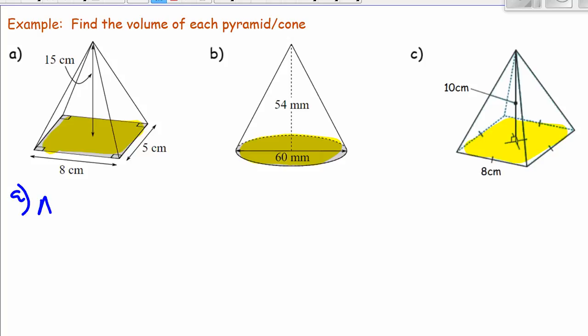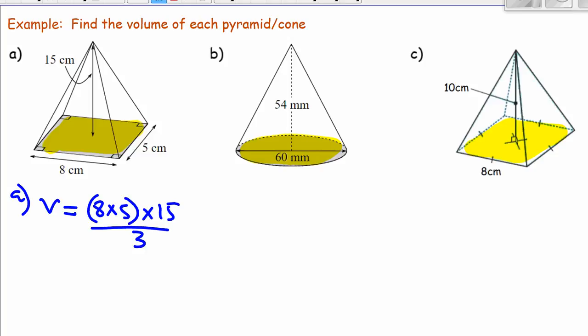For example A, the volume will be the area of the base, which is 8 times 5, multiplied by the height, which is 15, and then divided by 3. That gives us 200 centimetres cubed.